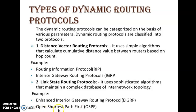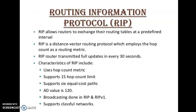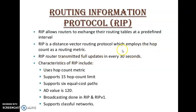RIP allows routers to exchange their routing tables at predefined intervals so that each router will learn about the network and update its own routing table. RIP is a Distance Vector Routing Protocol which employs hop count as a routing metric. Since it is a Distance Vector Routing Protocol, the routing metric considered here is hop count. RIP routers transmit full updates every 30 seconds.